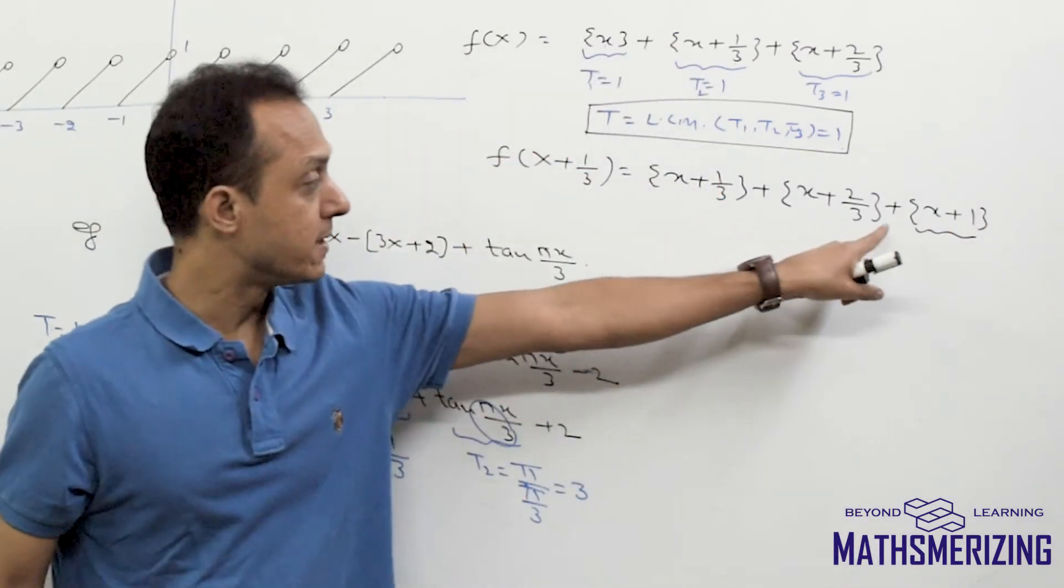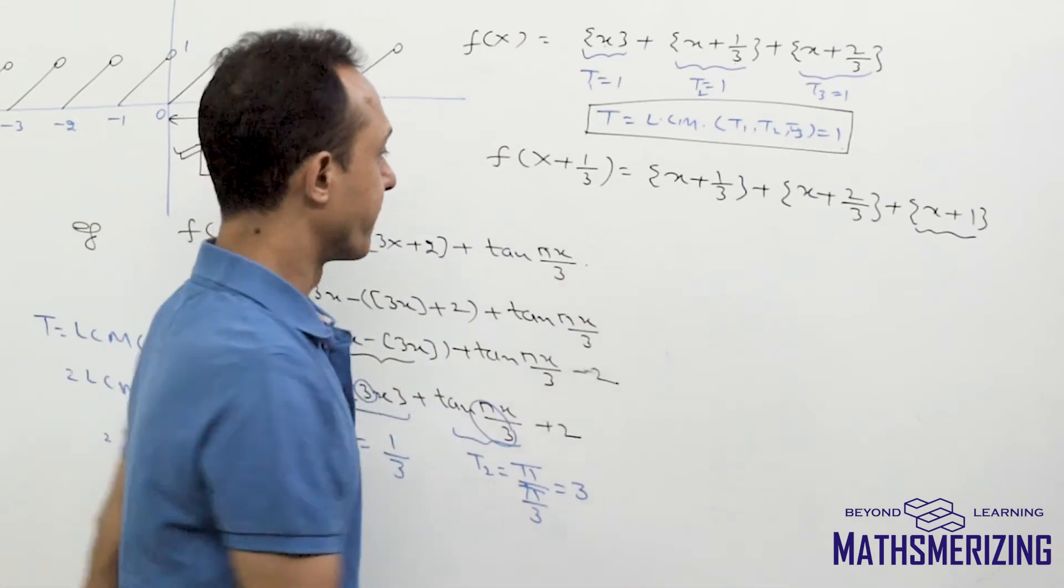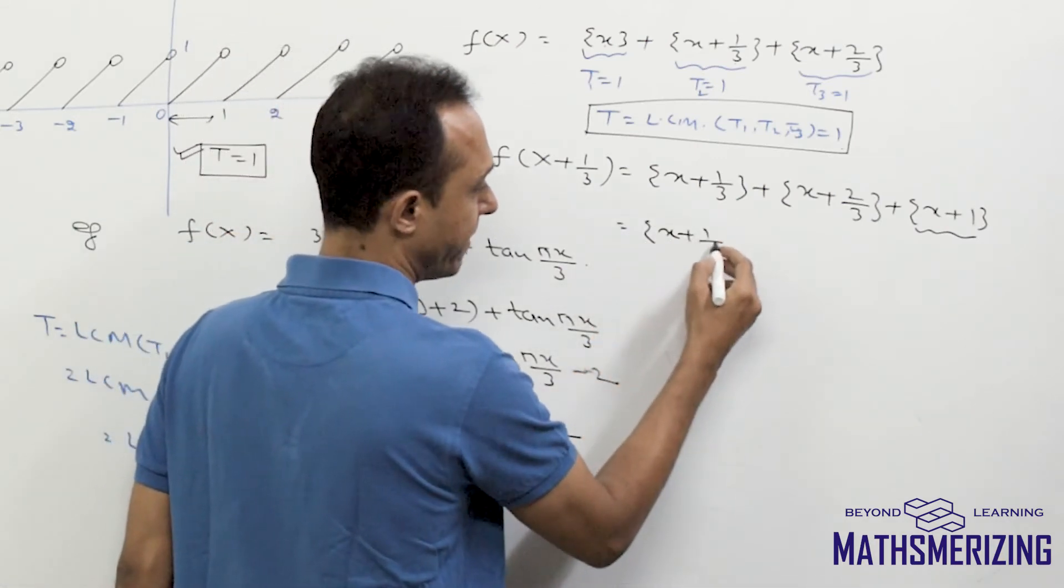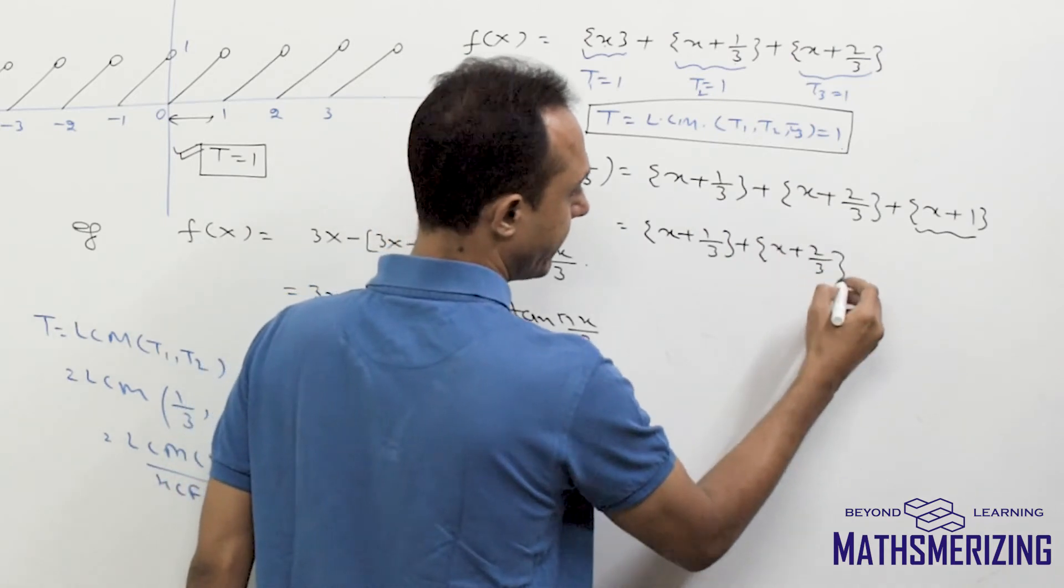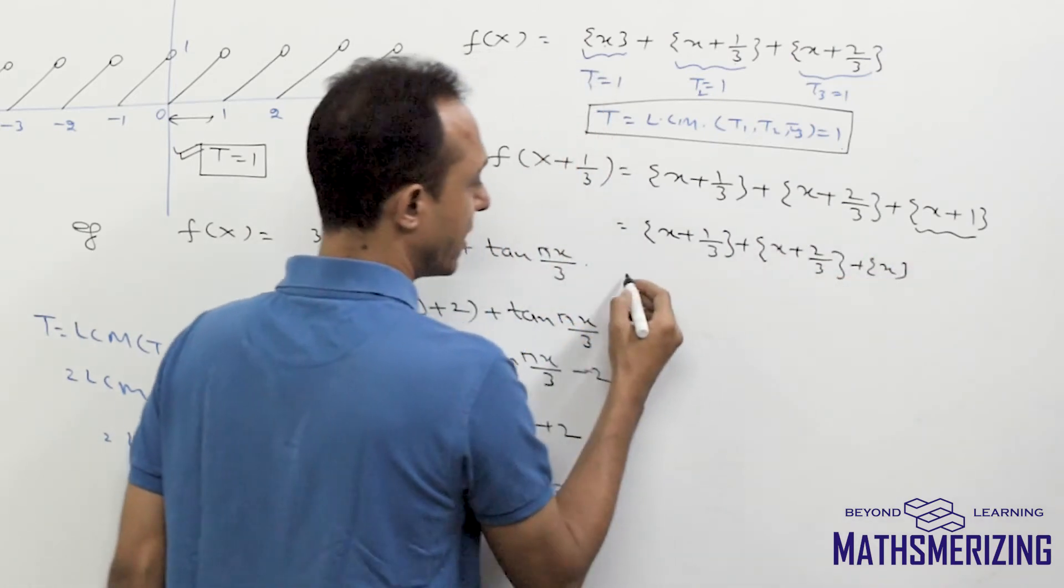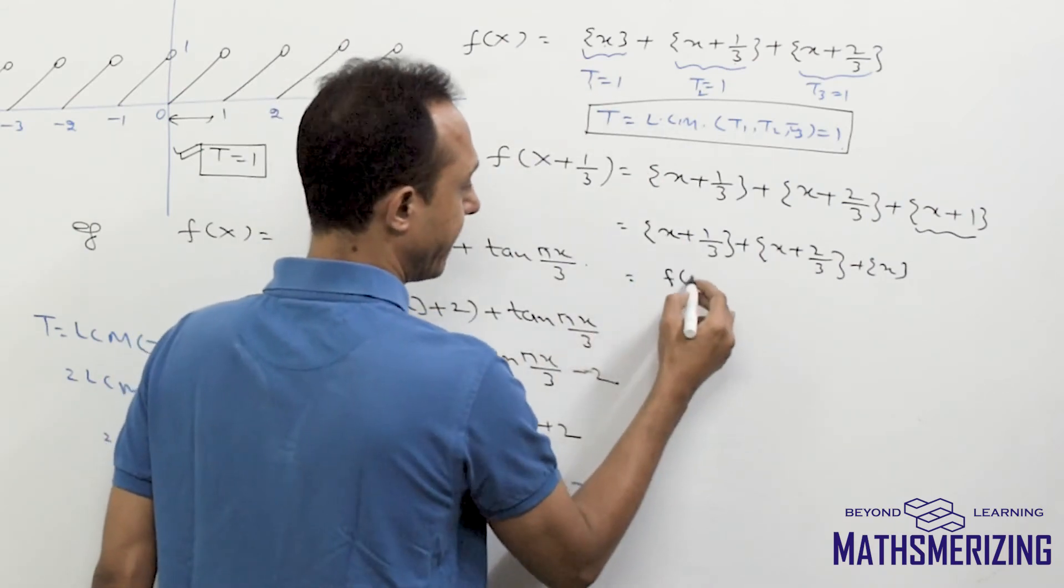Now fraction part of x plus n is simply fraction part of x. So I can write it as, so this is x plus 1 by 3, this is x plus 2 by 3, and this is fraction part of x, which is nothing but f(x).